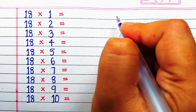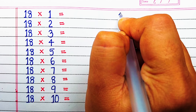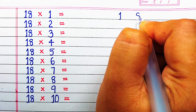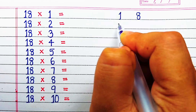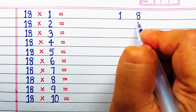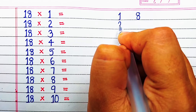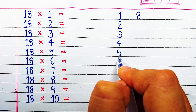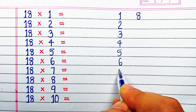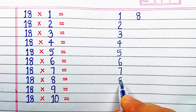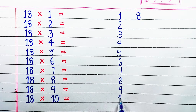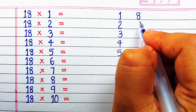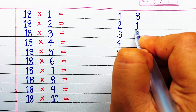Now let's learn the trick for the table of 18. Here we will write the table of 1 on the left, like we have done previously. Next we will write the table of 8 on the right.